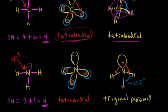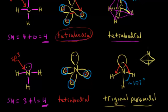Trigonal refers to the fact that nitrogen is bonded to three atoms — three hydrogens. The pyramidal part comes in because when determining molecular geometry, you ignore lone pairs of electrons. If you ignore that lone pair and look at the nitrogen at the top of a pyramid bonded to the three hydrogens below, that's where the pyramidal term comes from. So trigonal pyramidal is the geometry of the ammonia molecule, but the nitrogen is sp3 hybridized.